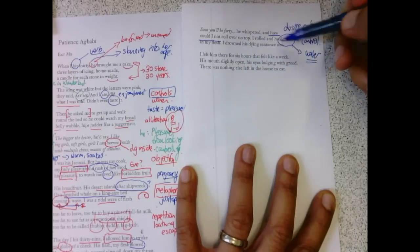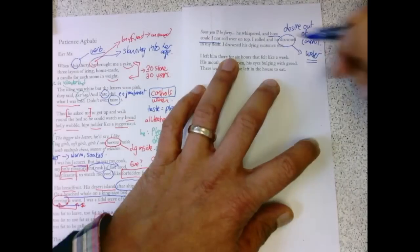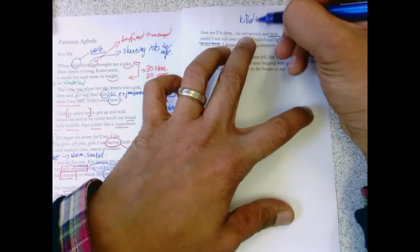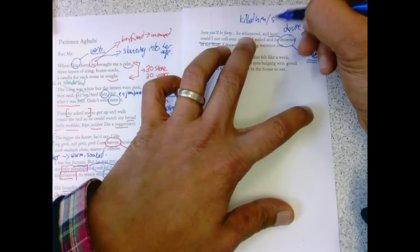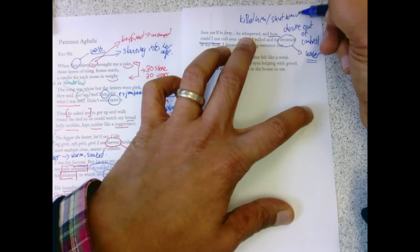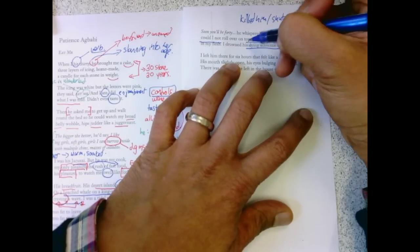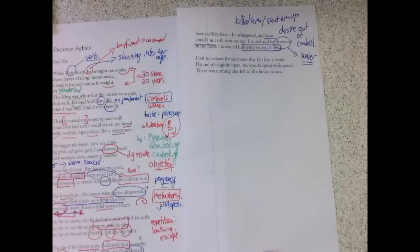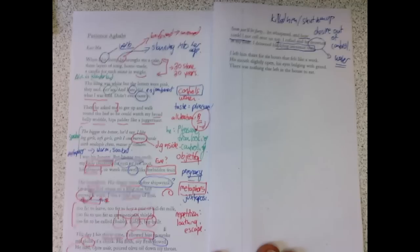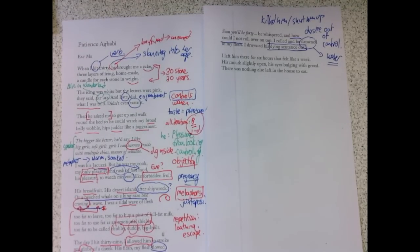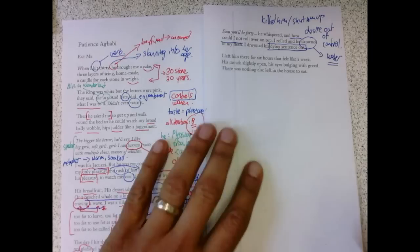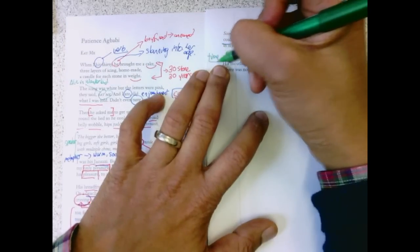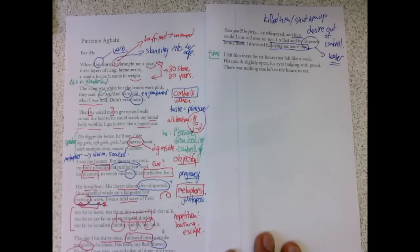I drowned his dying sentence out. So she killed him. But she also shut him up. We don't get the sense that he talks too much. But there is a kind of, maybe that could be a symbol of her stopping the control. Then we get this strange ending. I left him there for six hours that felt like a week. So again, time.